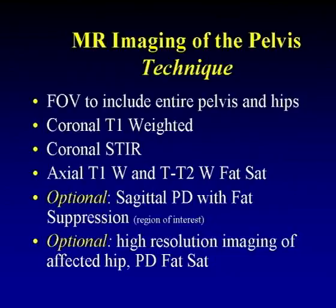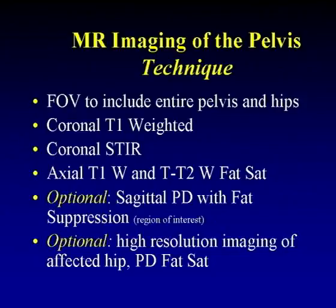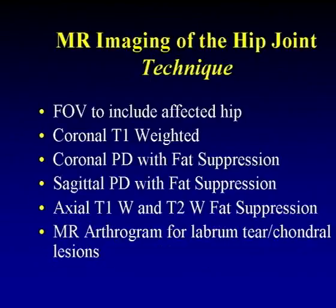As far as technique is concerned, I'm not going to go into detail. I would just like to make a point that unless we are dealing with internal derangement of the hip joint, my personal preference is to image the entire pelvis, particularly if we are looking for fractures. In avascular necrosis also, we would like to see if there is involvement of the other possibly asymptomatic femoral head. So I would like to include the entire pelvis, and then the routine imaging is done, and optional is performing sagittal and coronal high-resolution images of the particular site that is symptomatic.